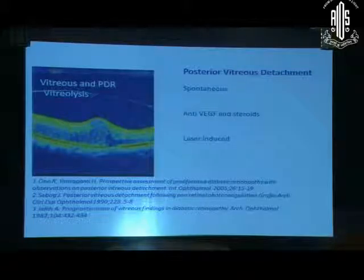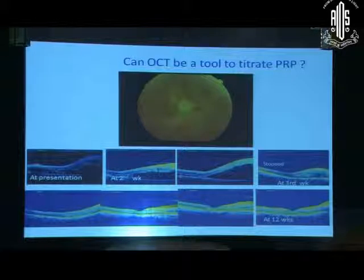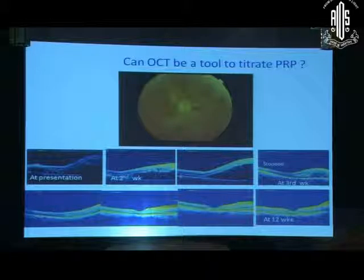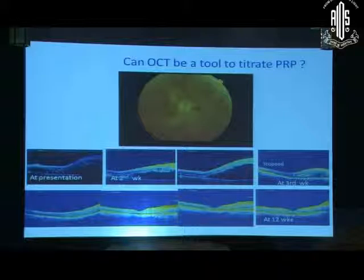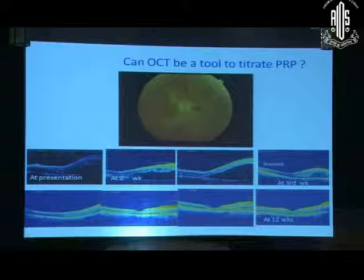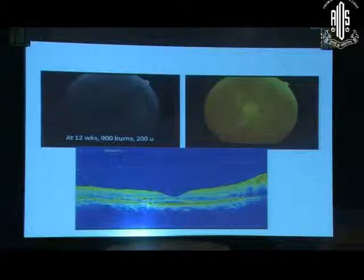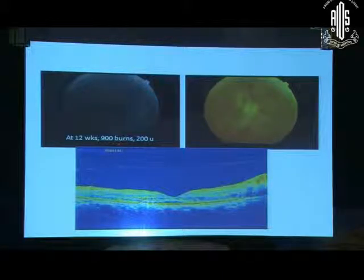We all know that posterior vitreous detachment can occur spontaneously during the course of disease. It can be induced by anti-VEGF, steroids, and can also be laser-induced. There are attempts at therapeutic vitreolysis as a treatment for proliferative diabetic retinopathy. Let me show a case follow-up wherein we used OCT as a tool to try to create PVD. This is a proliferative diabetic retinopathy — OCT at presentation does not show any PVD. At 2 weeks after some photocoagulation, PVD started occurring. At the third week there was complete separation of vitreous from the retina, and at 12 weeks this was the picture with total PVD and normal macula, with angiography showing regression after application of just 900 burns of 200-micron size.